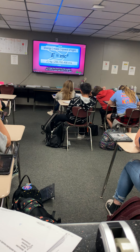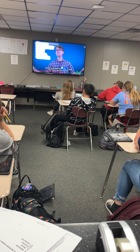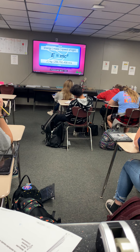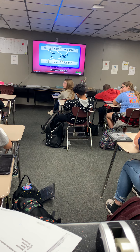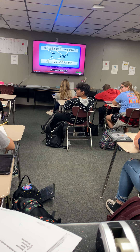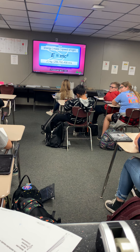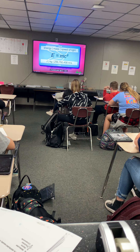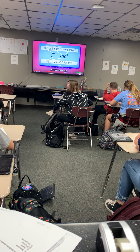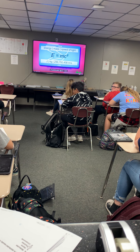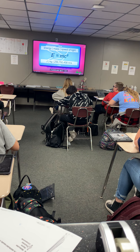You might have heard of this equation that a German patent clerk came up with about 100 years ago: E equals mc squared. Write this math problem down — E equals mc squared. Underneath that write: energy equals mass times speed of light squared. The E stands for energy, the M stands for mass, and c squared stands for speed of light squared.